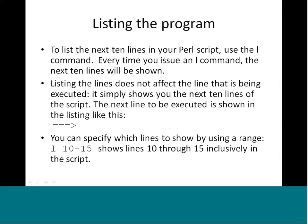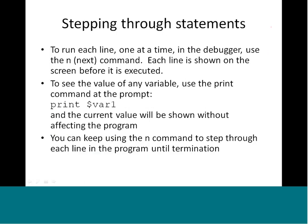To list the next 10 lines in the Perl script, use the l command. Every time you issue the l command, the next 10 lines are shown. Listing lines does not affect the line being executed. The next line to be executed is shown with an arrow (=>). You can also specify a range, for example L 10-15 shows lines 10 to 15. To see the value of any variable, use the print command at the debugger prompt, for example: print $x - this shows the current value without affecting the program.